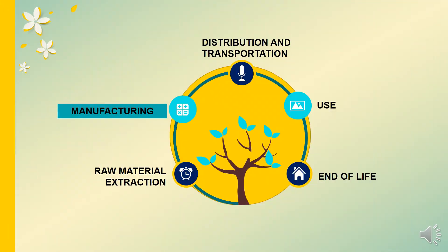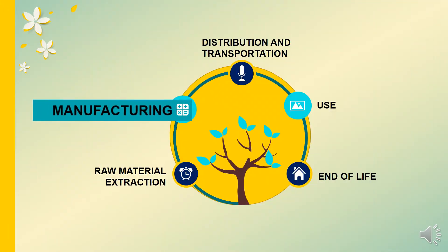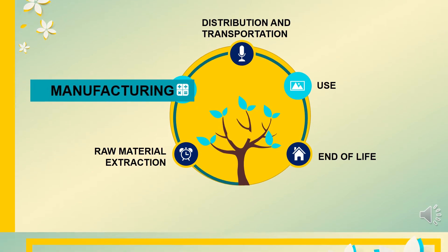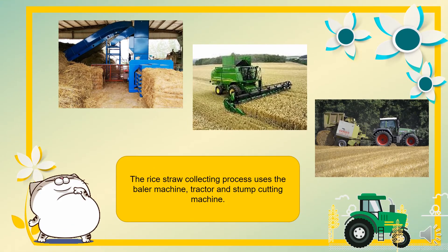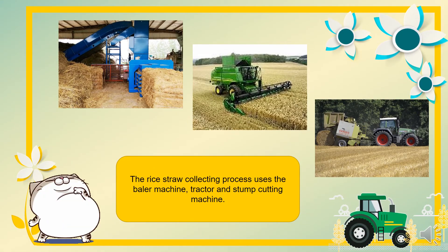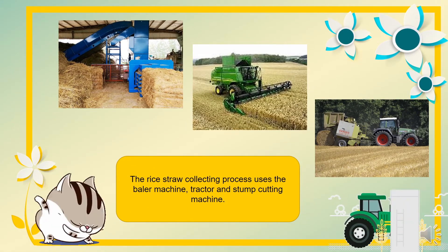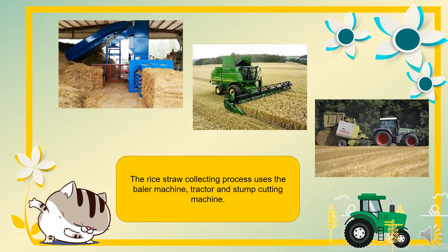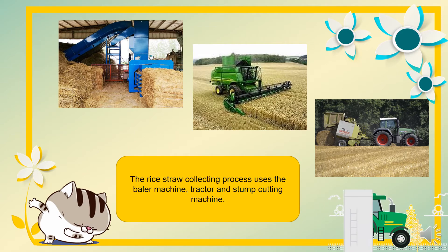Next, the second stage is manufacturing. For the manufacturing, the rice straw collecting process will use a baler machine, tractor, and stump cutting machine.